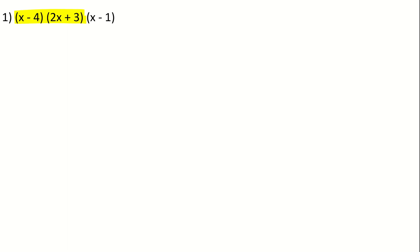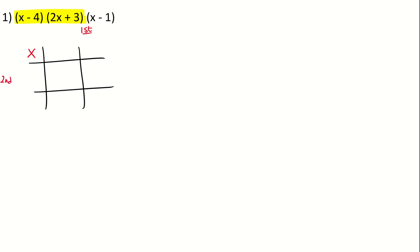The first step is to multiply the first two brackets together, and for that you create a box — a two-way box. You put your multiplication sign to remind yourself that you are multiplying. You put the first bracket here, the second bracket there. The first term in the first bracket is x, so I'm going to put x here.